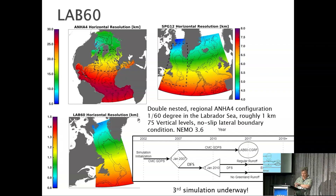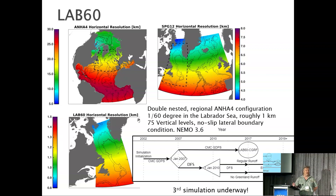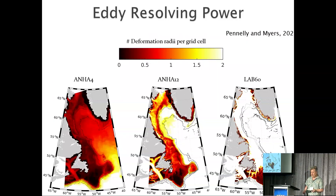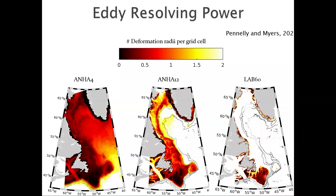What's really got me thinking about resolution is that we set up a triple nest using AGRIF for the Labrador Sea — standard quarter-degree resolution, then 1/12th of the subpolar gyre, then 1/60th of a degree, basically 800 meters to 1.2 kilometers in the Labrador Sea — and did a series of 15 to 20 year integrations using different forcing with Greenland runoff turned on and off. The reason is eddy-resolving power: at quarter-degree, we resolve basically nothing; at 1/12th, we're getting there in the interior but have major issues on the shelf; and it's only at 1/60th where we have two or more grid cells per Rossby radius and can get a good representation of eddies.